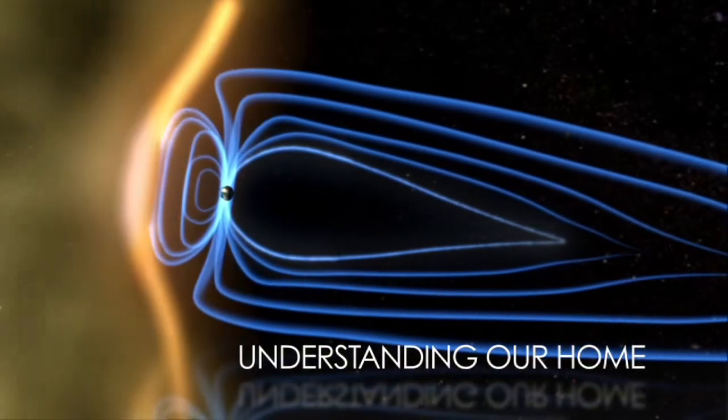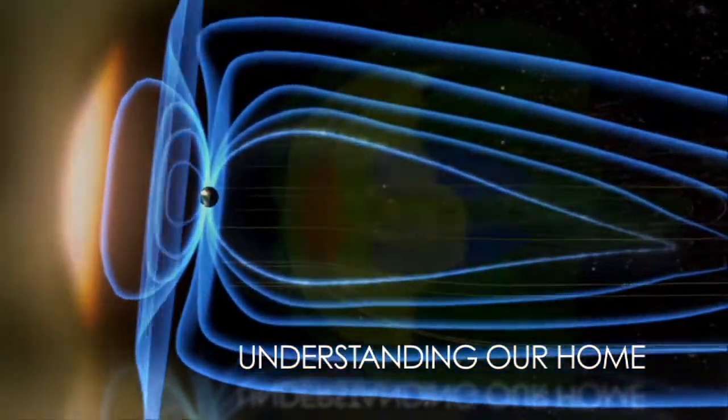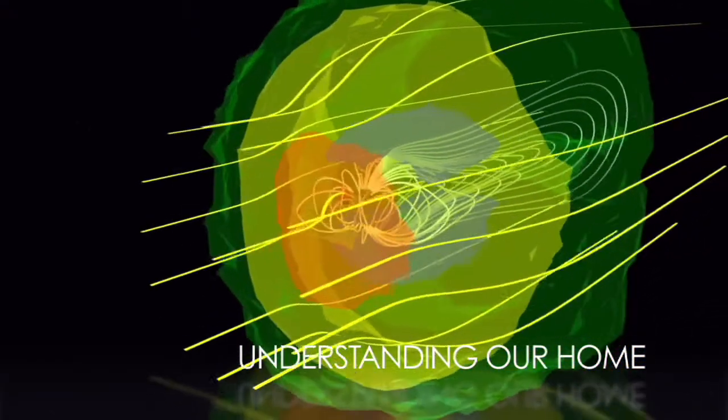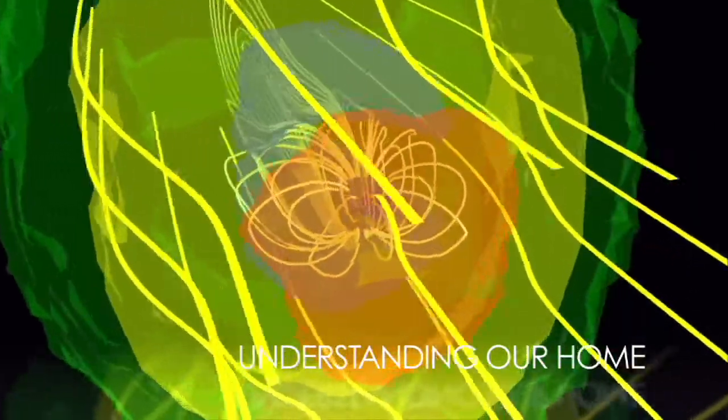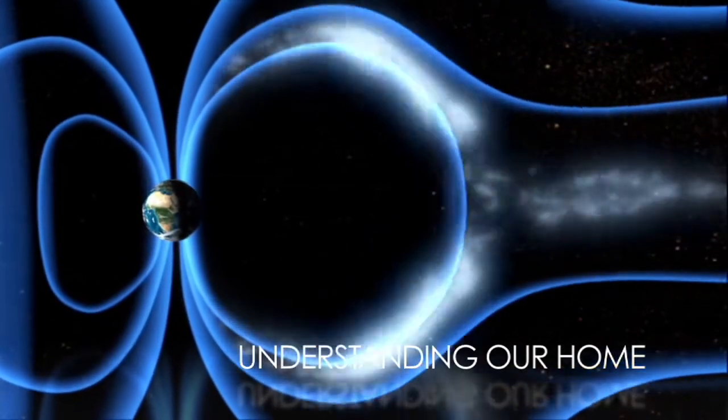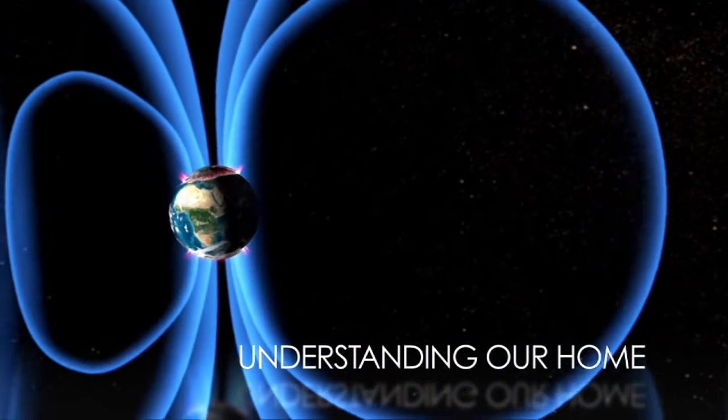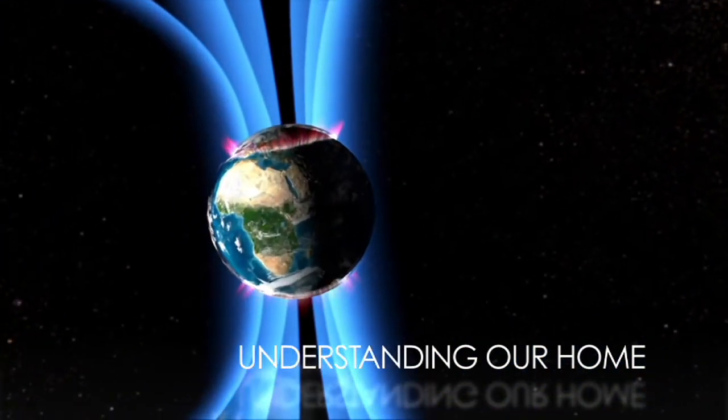NASA also studies how the Sun's variability affects our home. Solar storms and solar winds have a strong effect on the Earth and its magnetic field. By studying the Sun's natural ebb and flow, we can learn more about its role in creating phenomena such as the Northern Lights.